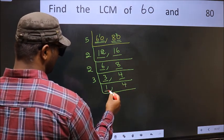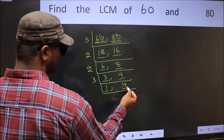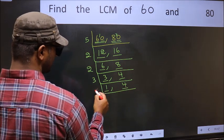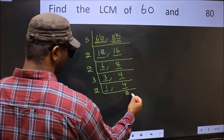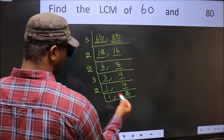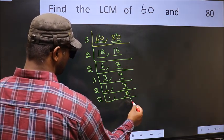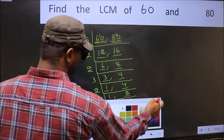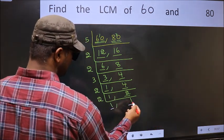Now we got 1 here, so focus on the other number 4. 4 is 2 times 2. Now we have 2. 2 is a prime number, so 2 times 1 is 2. So we got 1 in both places.